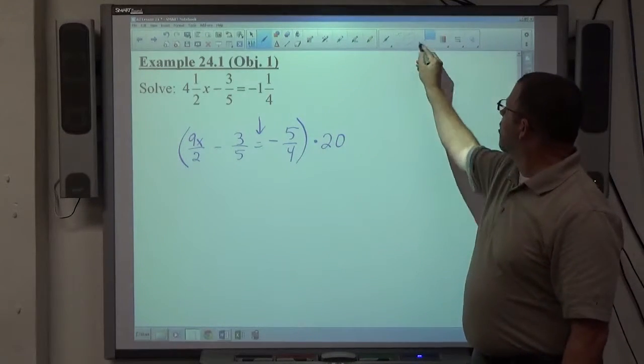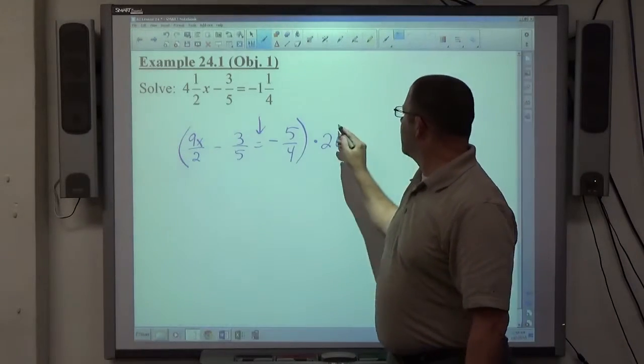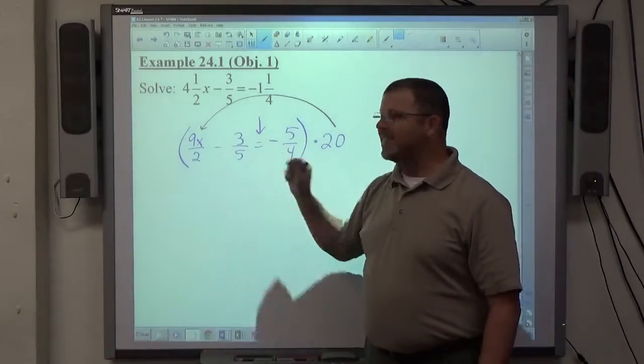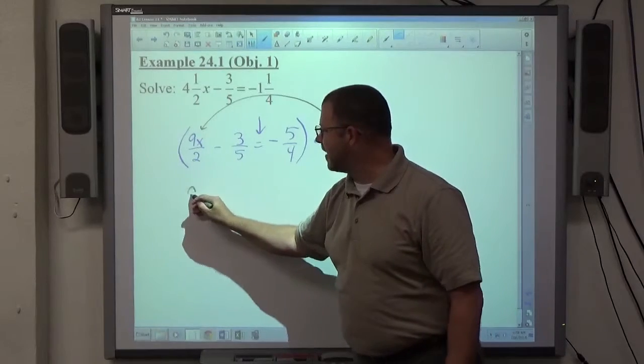So, multiply by 20, and the multiplication process is, as it always has been, we multiply by dividing first, multiplying the result times the top. 20 divided by 2 is 10. 10 times 9x is 90x.